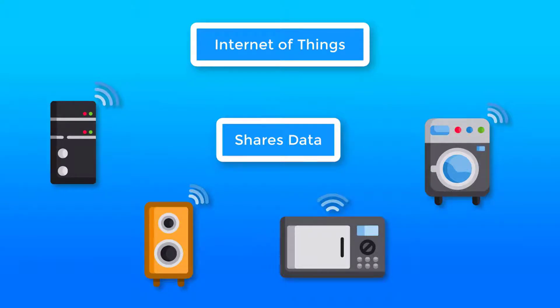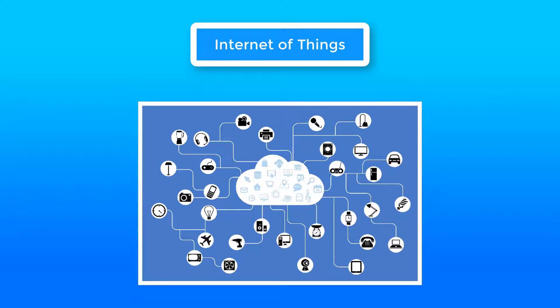These things are embedded with software, sensors, actuators, etc., for efficiency in work and to decrease human workload. These embedded technologies in objects or IoT devices help them to perform their tasks. Almost every physical device can be converted into IoT if it can use the internet and be controlled that way.